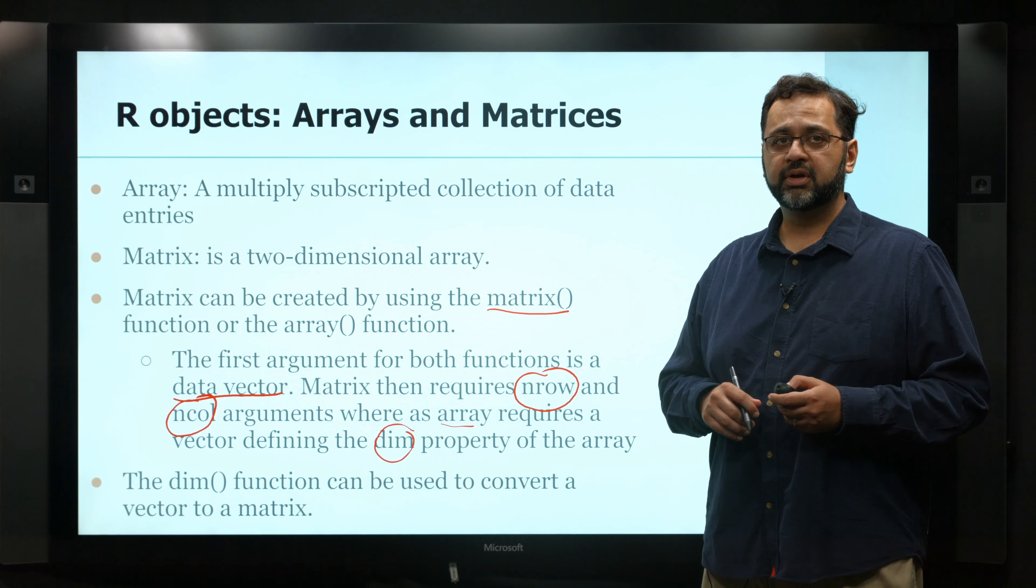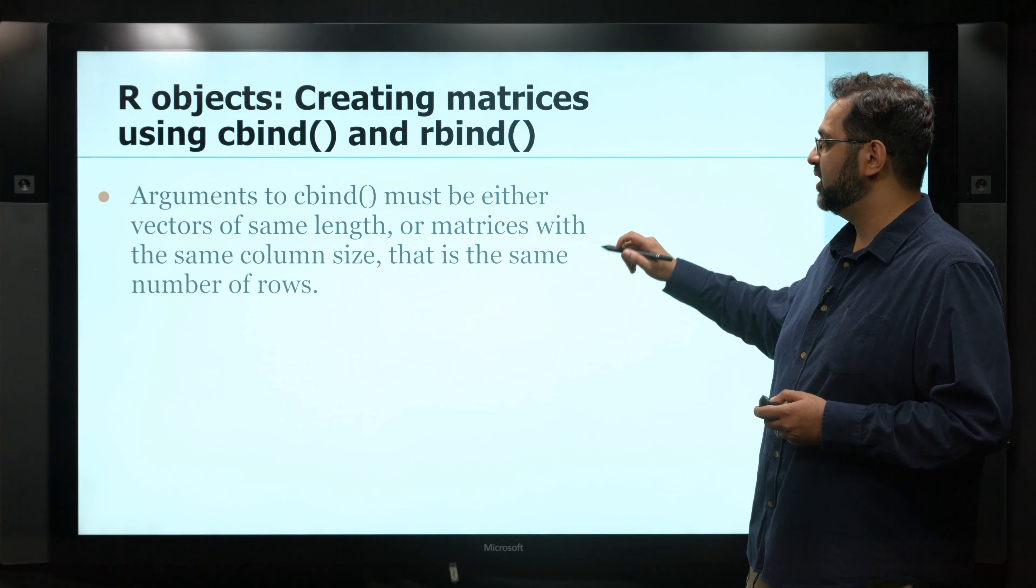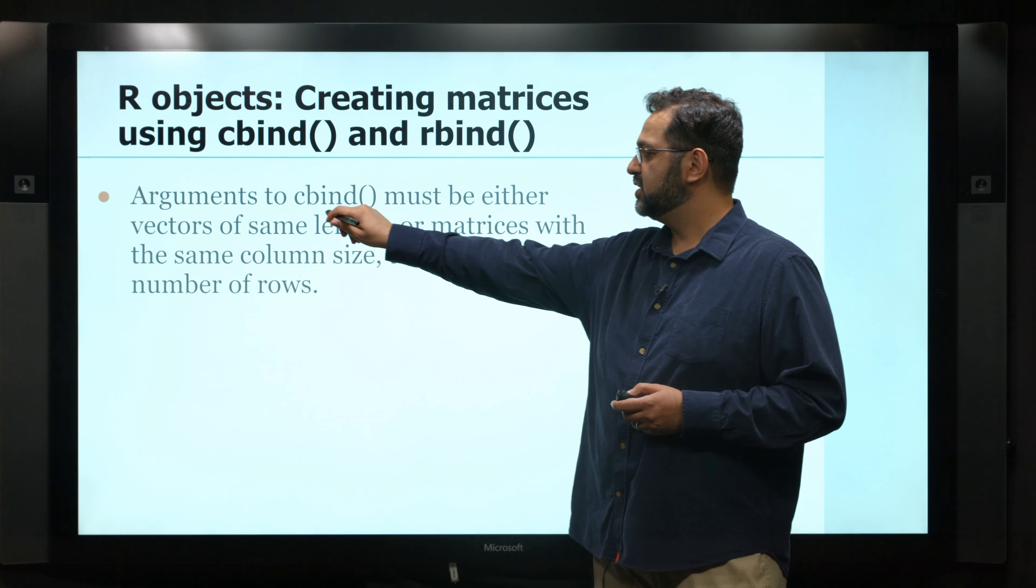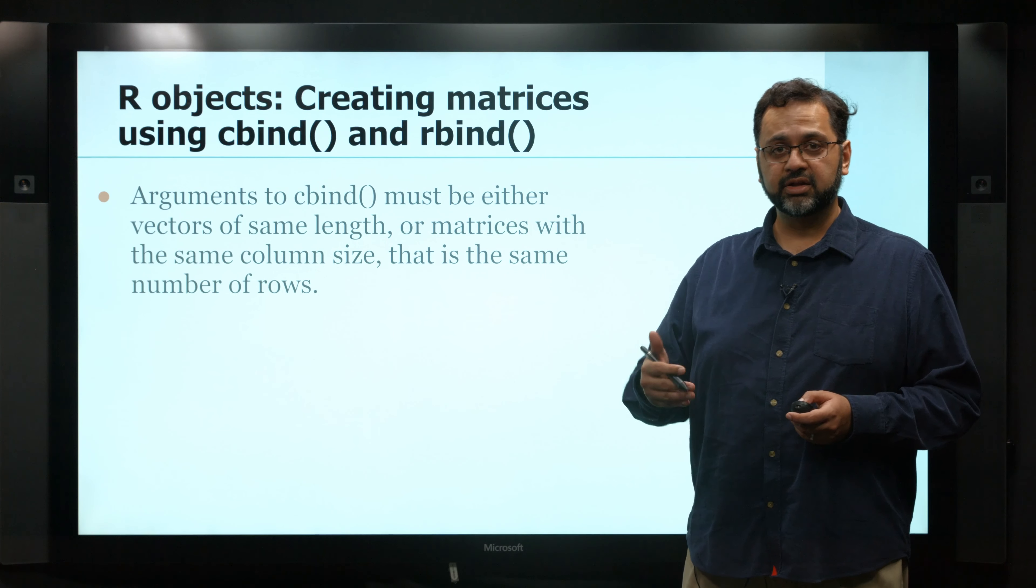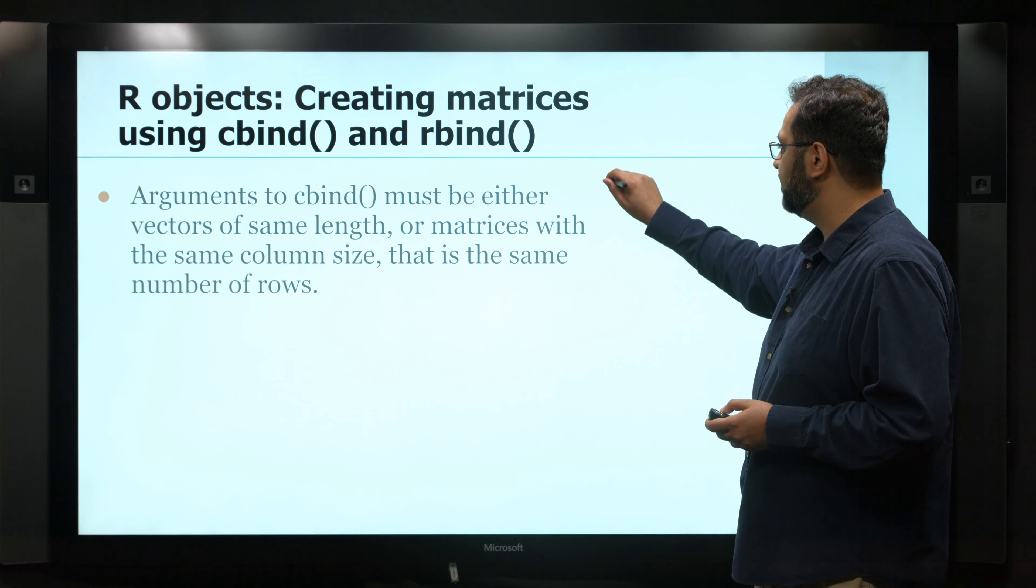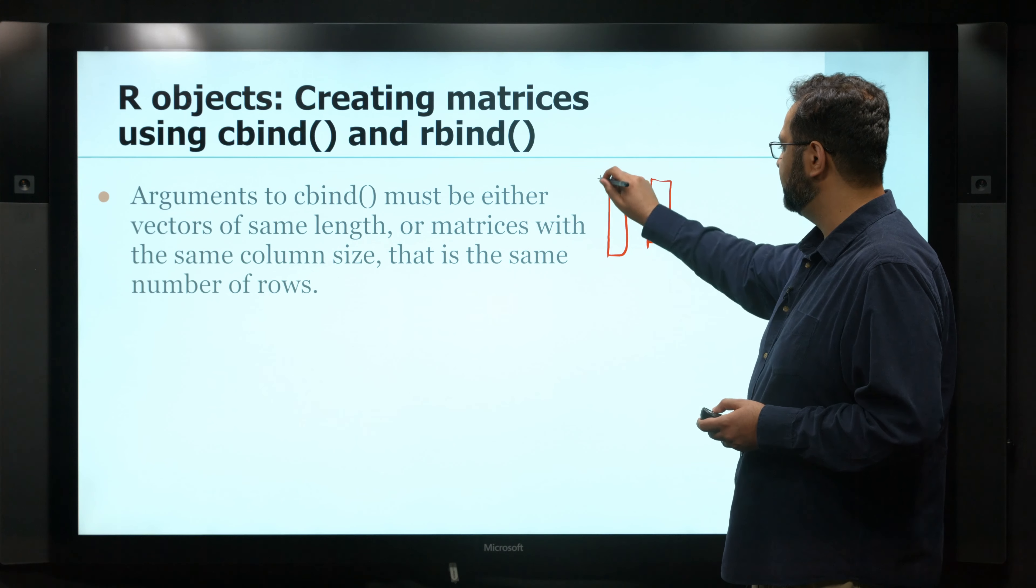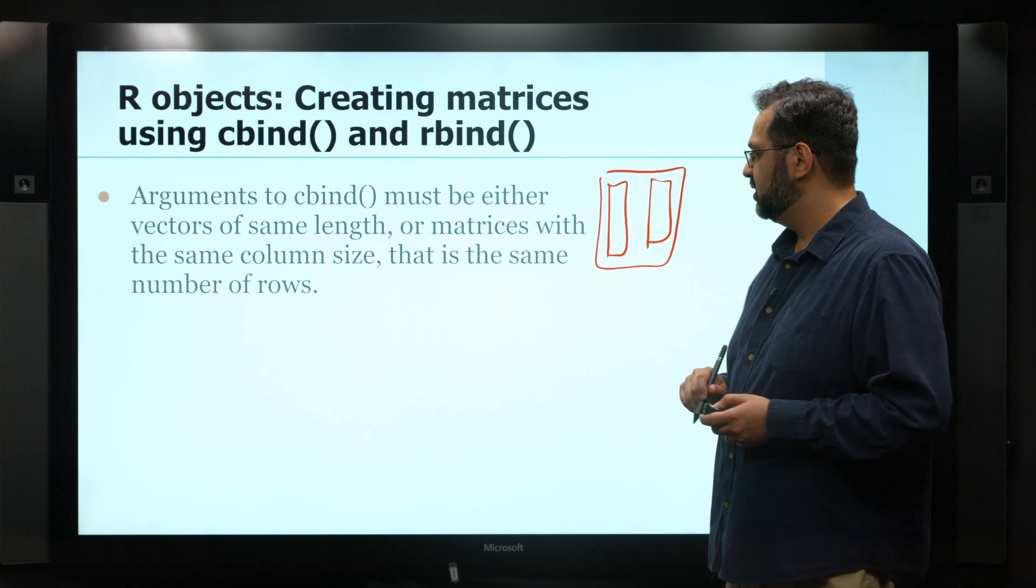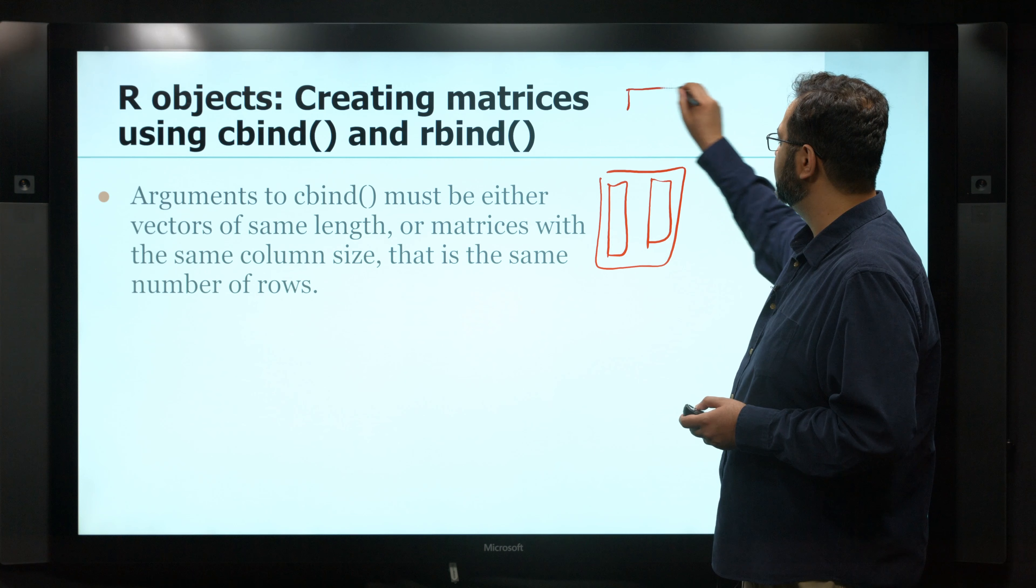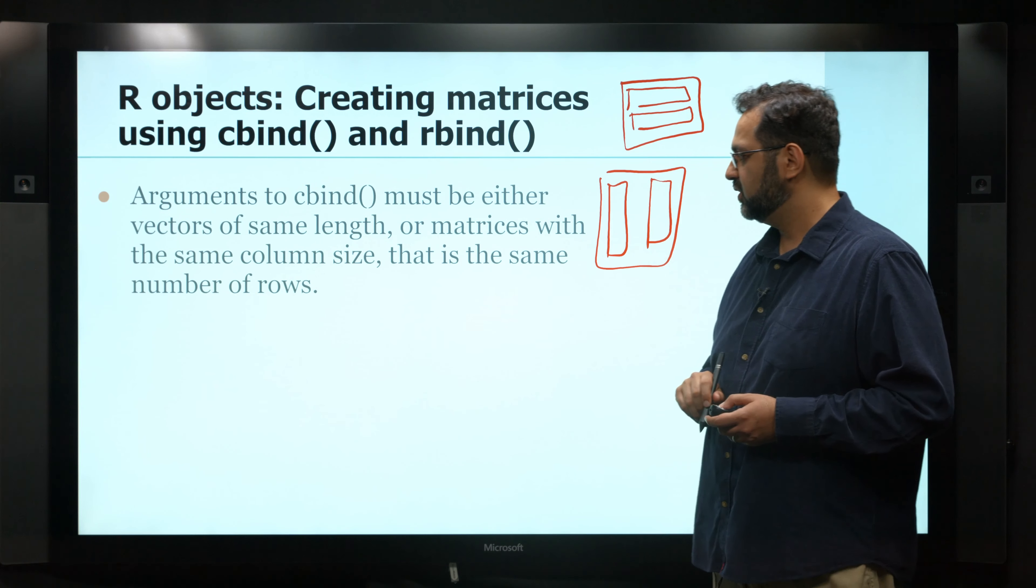Another one is using the cbind and rbind. So cbind is basically binding vectors or matrices column by column. So imagine you have a vector here. It would basically combine these two things into a matrix. rbind works the other way. It takes a vector row by row and creates a matrix out of them.